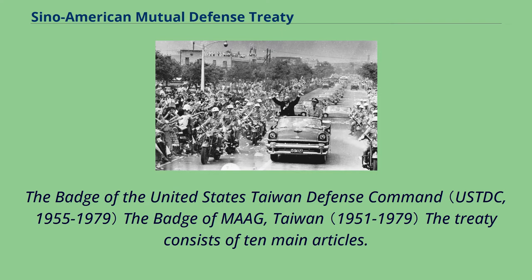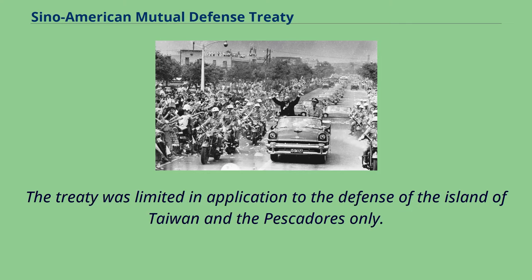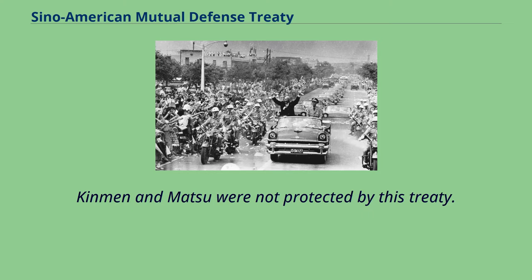The treaty consists of 10 main articles. The content included the provision that if one country came under attack, the other would aid and provide military support. The treaty was limited in application to the defense of the island of Taiwan and the Pescadores only. Kinmen and Matsu were not protected by this treaty.